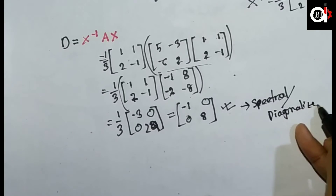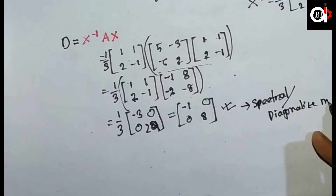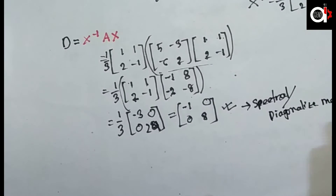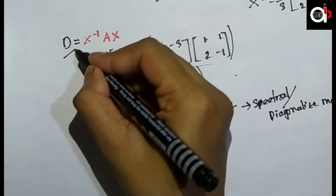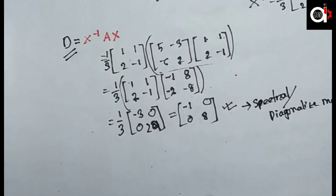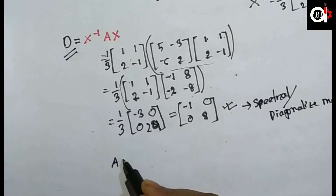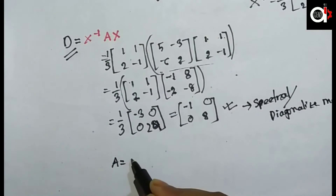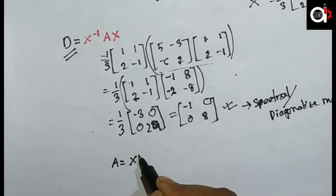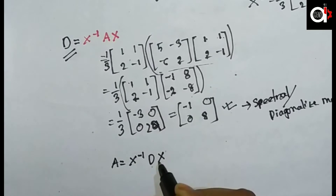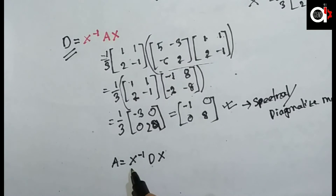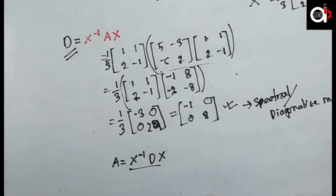This confirms that matrix A is diagonalized, and its diagonal form is the matrix D. So when A is diagonalized, we write D = X⁻¹AX, where X is the modal matrix.